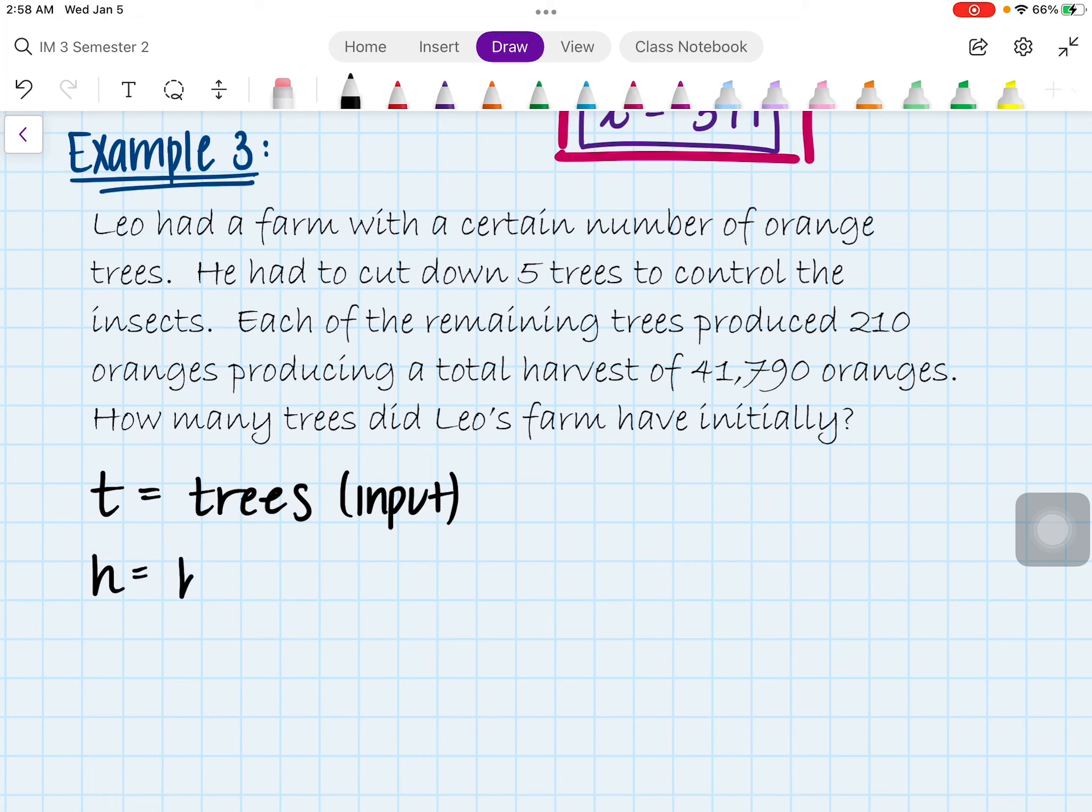And then h, in this case, is going to be representing the harvest, because we want to see how much is expected from us at the end of the day or how much is expected from these trees. So this is the output. All right, so h is harvest. T is trees. So it says they have orange trees.